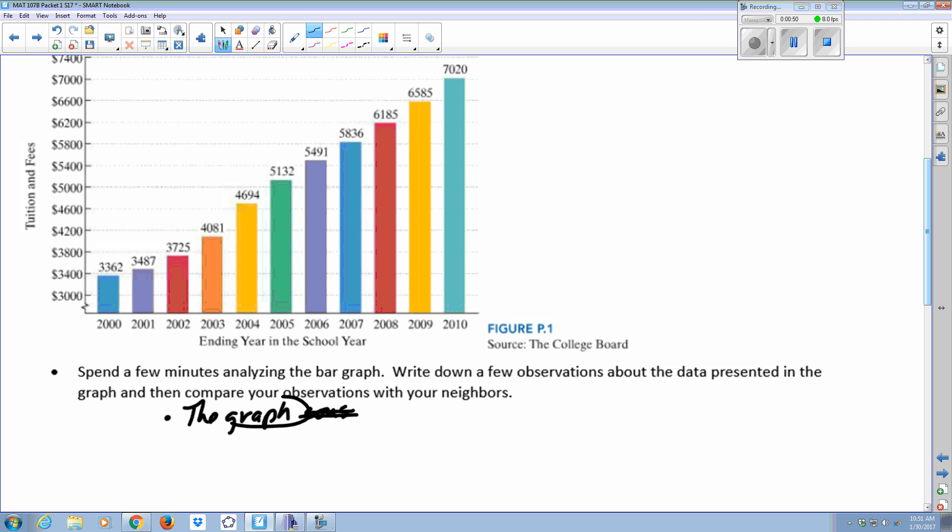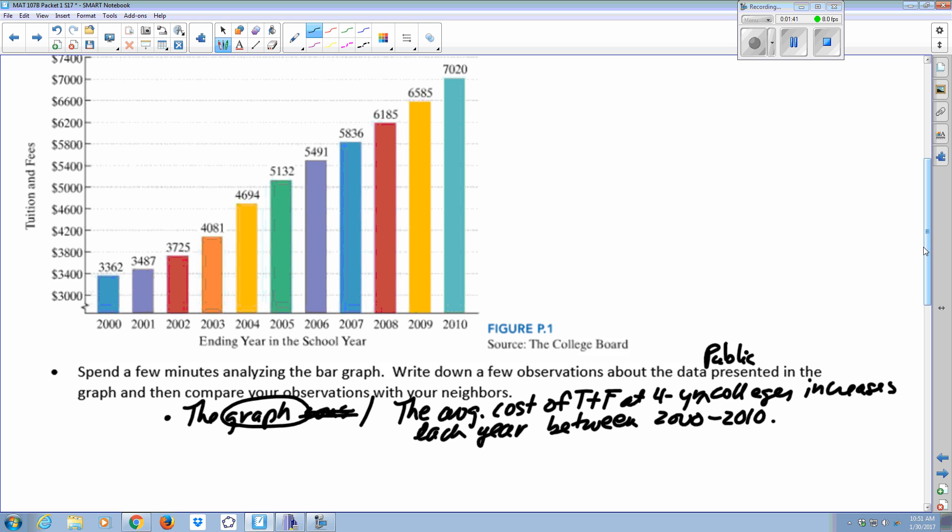It's not so much the graph. What are we looking at here? We're looking at the cost. Two variables - the cost, the average cost of tuition and fees at four-year public colleges versus time, starting with 2000. So what you could say is that the average cost of tuition and fees at public colleges increases each year between 2000 to 2010.